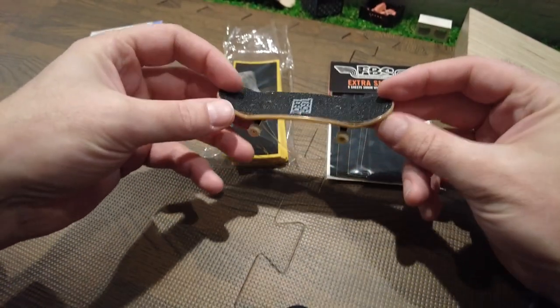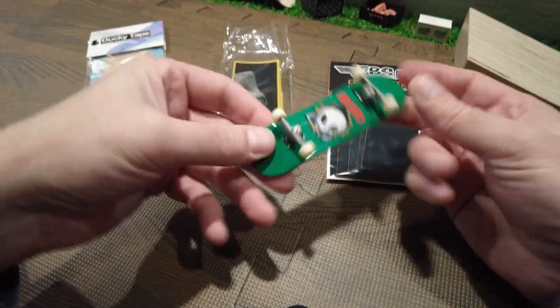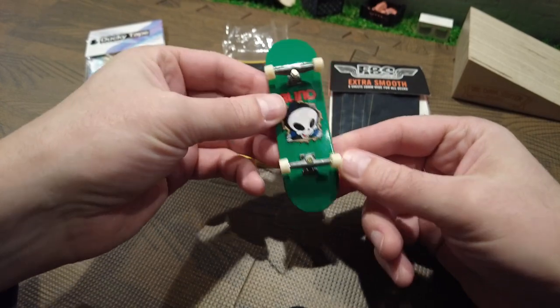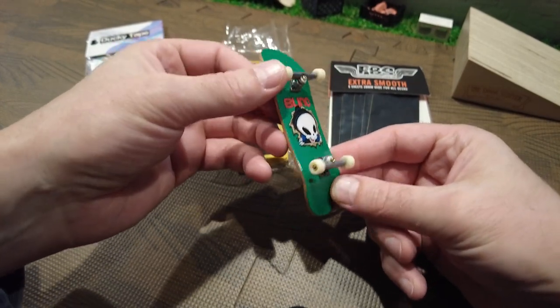Aside from the grip tape, we're also going to change out the bushings and wheels, and possibly put some lock nuts on. Let's get started.